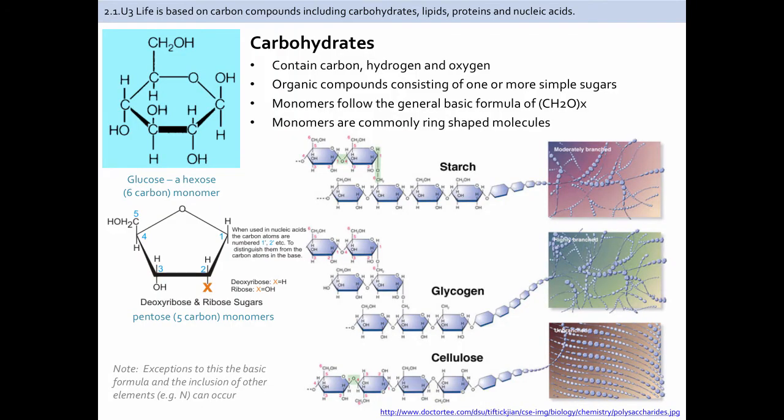Life is based on carbon compounds, including carbohydrates, which contain carbon, hydrogen, and oxygen, usually in a proportion of one carbon to two hydrogens to one oxygen. They are organic compounds consisting of one or more simple sugars, and the monomers are typically ring-shaped molecules. Examples include starches like glycogen and cellulose, but also glucose, which is a six-carbon monomer, and deoxyribose and ribose sugars, which are part of nucleic acids.